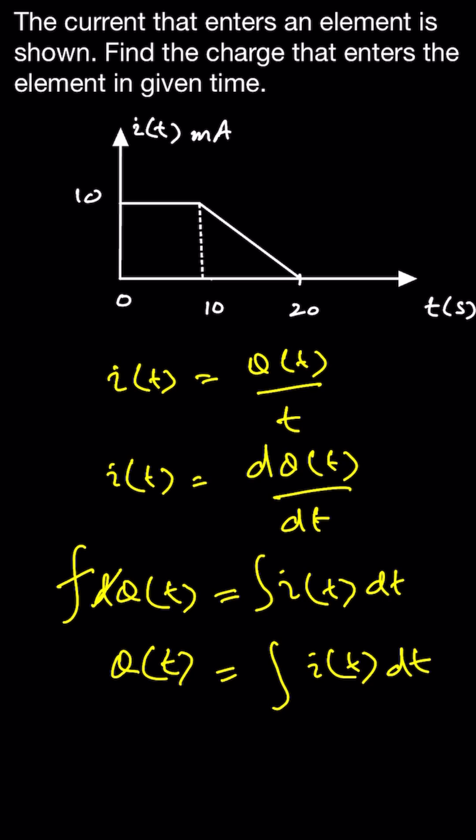And the integration means the sum of the product of i(t) and dt. So i(t) and dt will give us - this axis gives us the i(t) and this axis gives us the time. And the product of i(t) with dt will be the area under the graph.